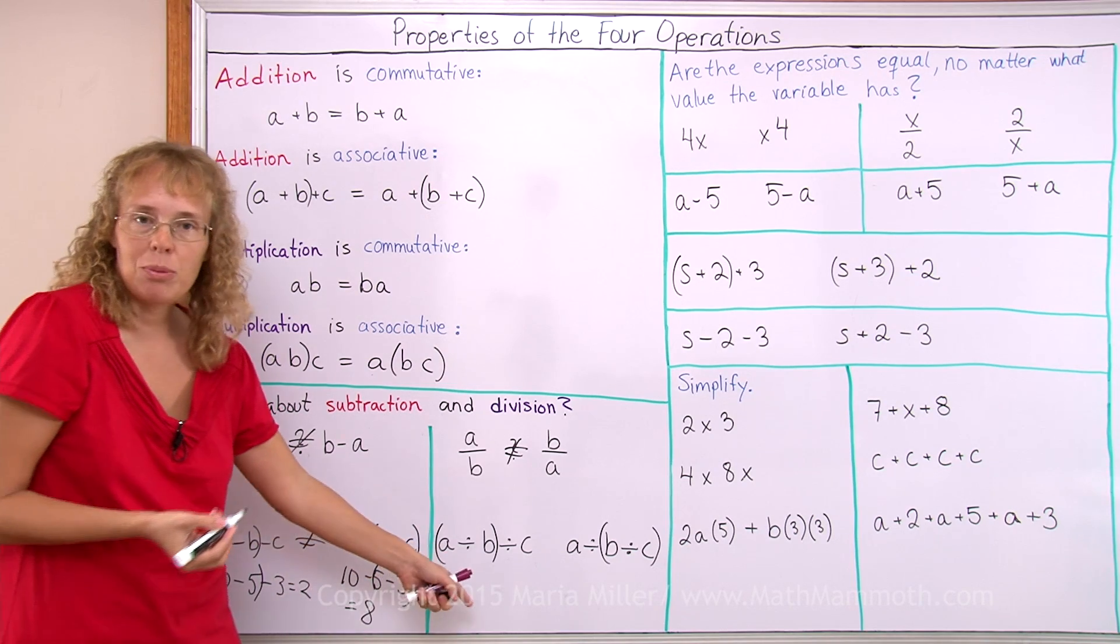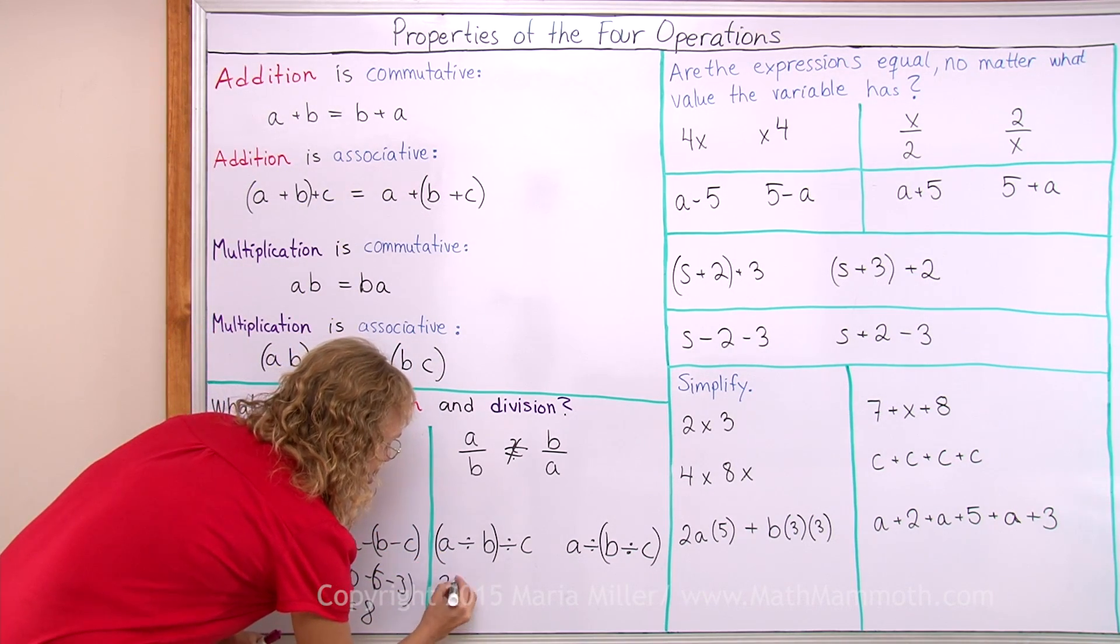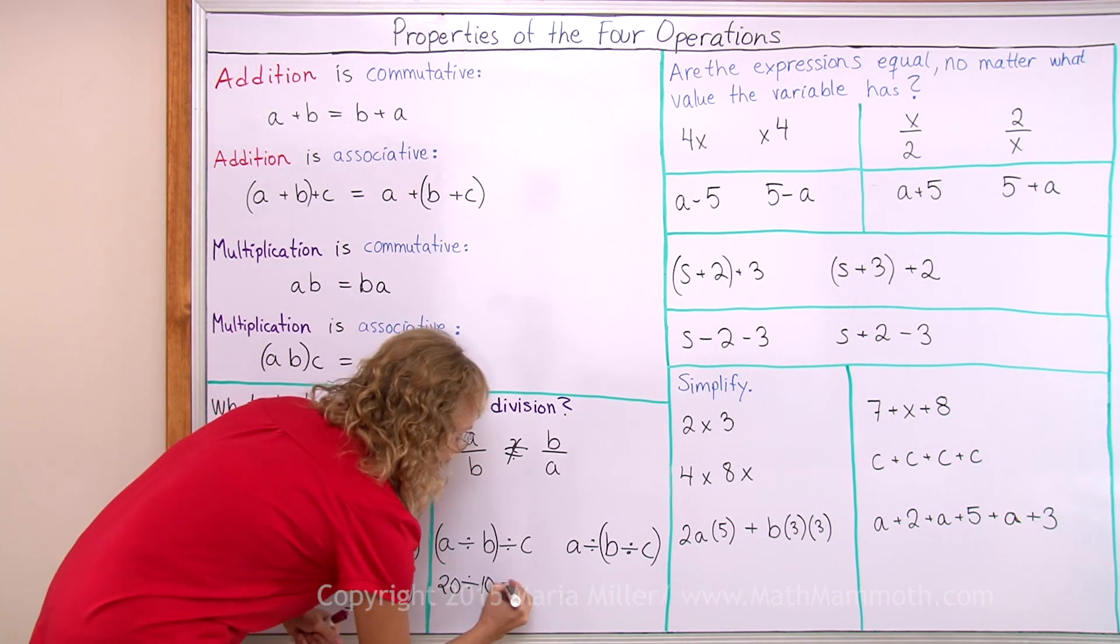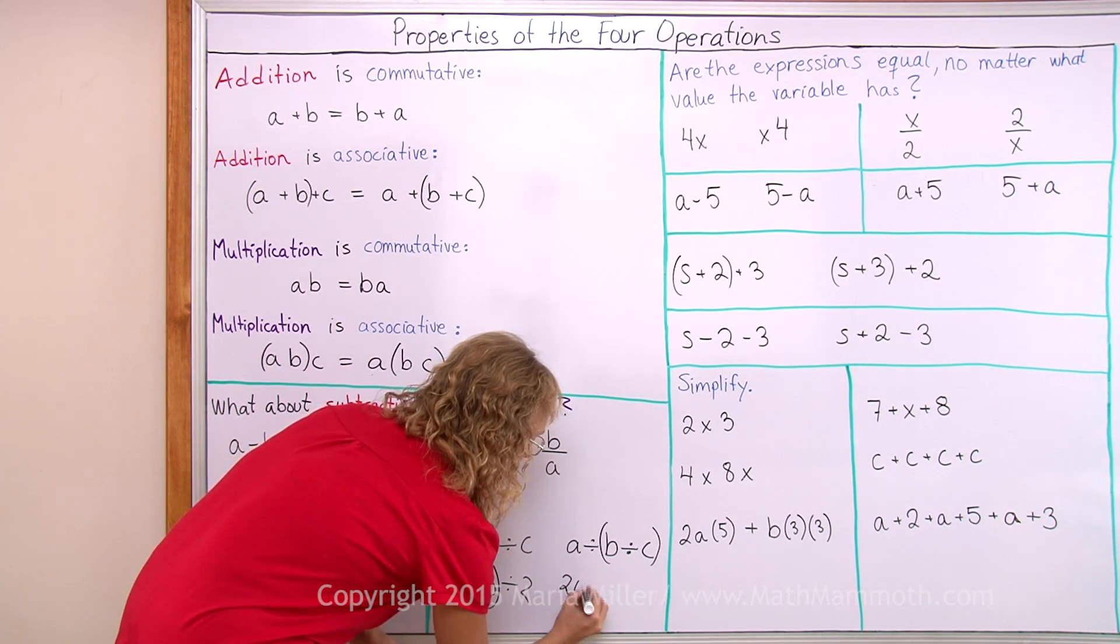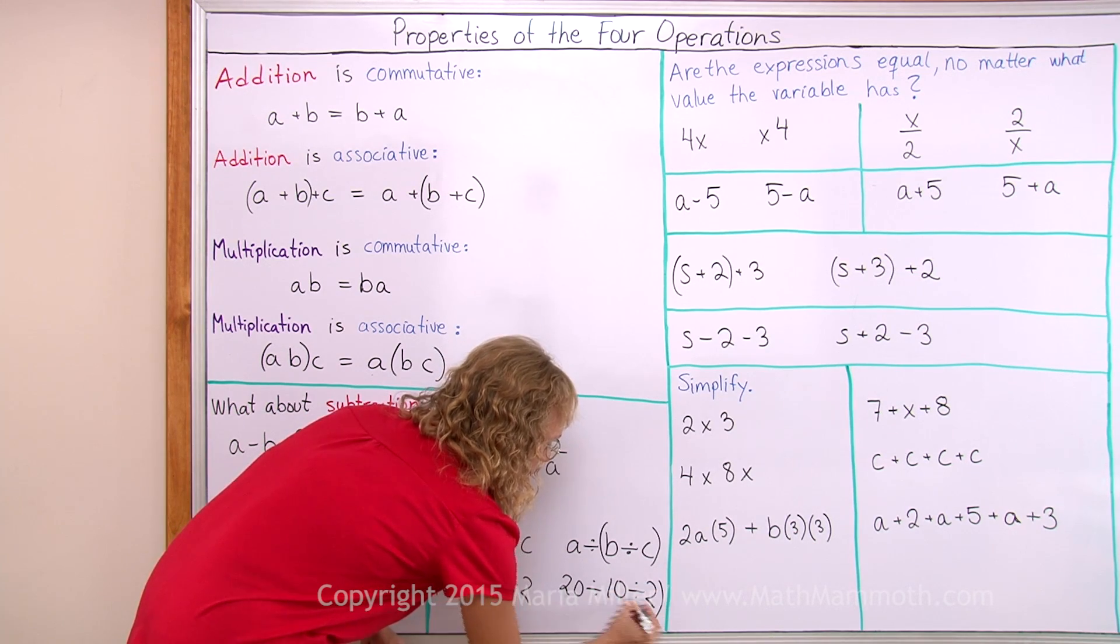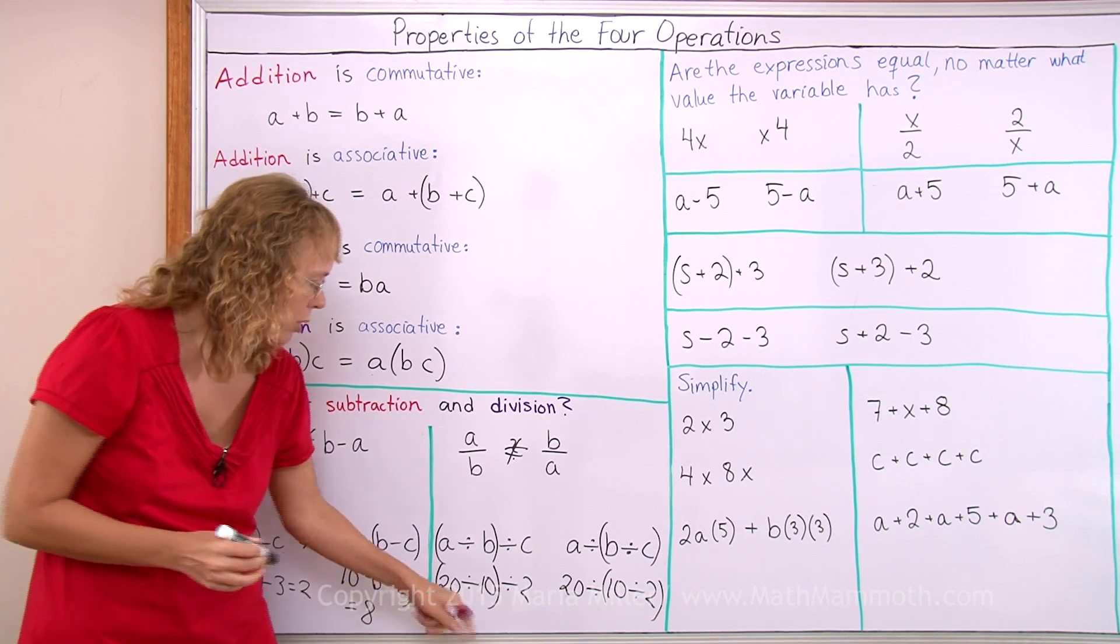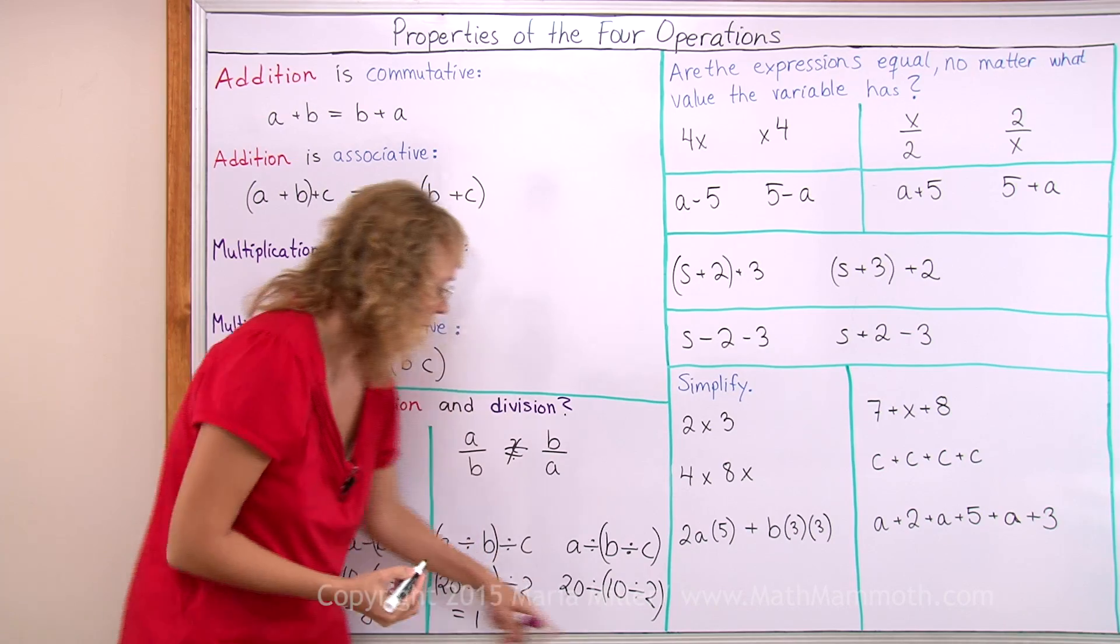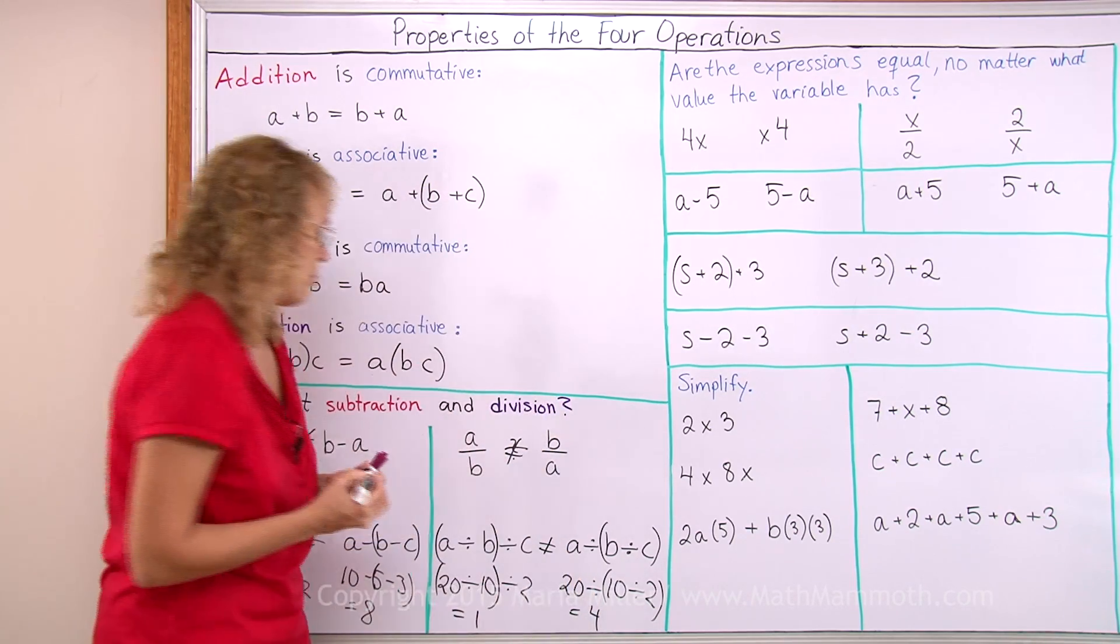And again, it fails to be associative as well. I'm gonna show it to you by choosing certain numbers here. 20 and 10 and 2. Divide those first or 10 divided by 2. Here we get 2 divided by 2 equals 1. Here we get 5 from here and 20 divided by 5 equals 4. So no, they are not equal.